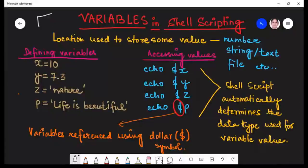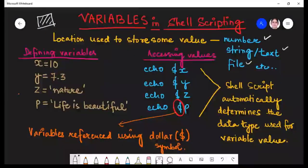So what is a variable? A variable is a memory location which is used to store some value. And that value can be a number, it can be a string or text, it can be a file, or it can be any form of data.